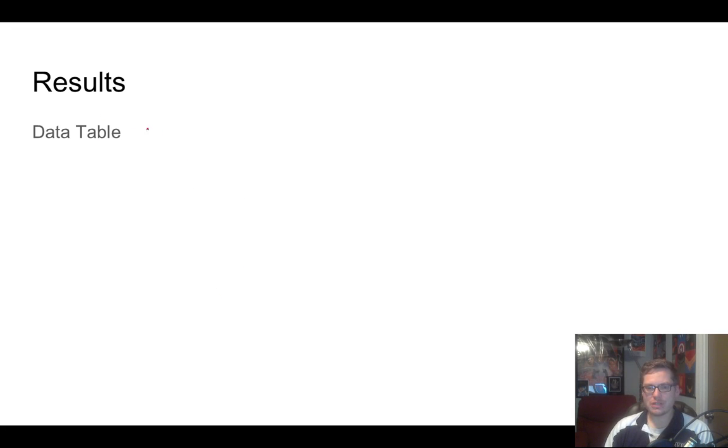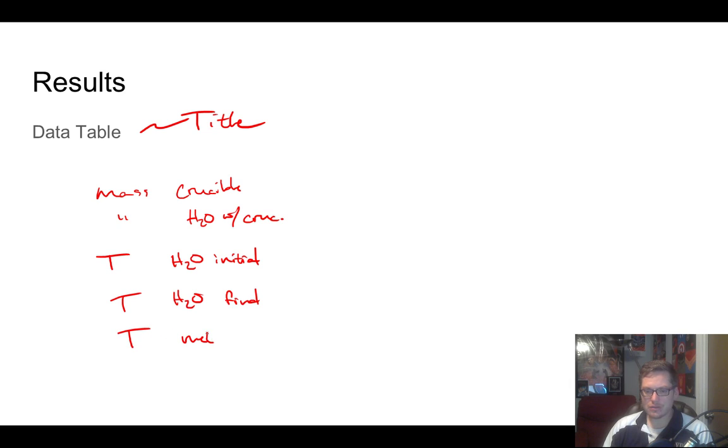You do need a data table. Remember, data tables need a title. So make sure you put a title in there. And then, so you'll need just some ideas. I'm not going to give you everything, but this is just a thing to get you started. So you need the mass of the crucible, and you need the mass of the water with the crucible. And you need the temperature of the water initially, and the temperature of the water final. You need the temperature of the metal initial. Mass of the metal. Just some ideas. So make sure it's a nice table, it looks nice, so on and so forth.